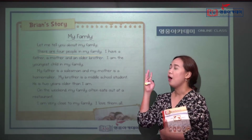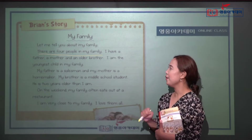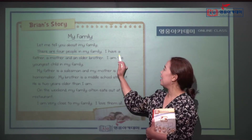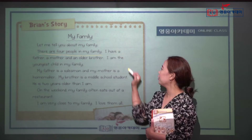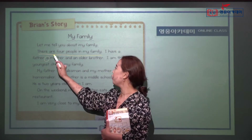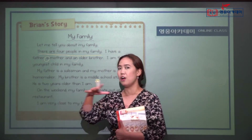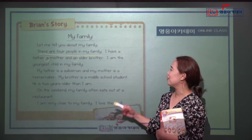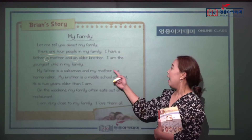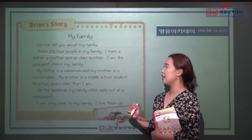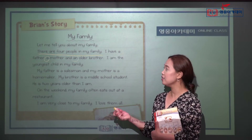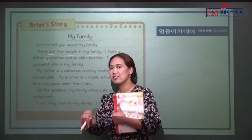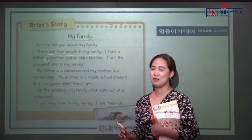I have a father, a mother, and an older brother. Always remember there is an article: 'a father,' 'a mother,' and 'an older brother.' Use 'a' or 'an' before a singular noun. 'I am the youngest child in my family' — he is the last, the youngest in the family.